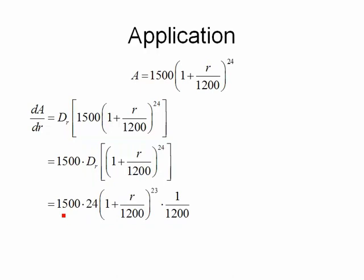So my derivative ends up being 1,500 times 24, times the quantity 1 plus r over 1,200 to the 23rd, times the fraction 1 over 1,200. Normally I would probably stop there if I was taking a derivative, but I know in the next step I have to plug some numbers into this, so I'm going to try and combine some things here. Let's go ahead and take 1,500 times 24, and multiply that by 1 over 1,200. When I do that, I get 30. So what I'm now left with is 30 times the quantity 1 plus r over 1,200 to the 23rd power.